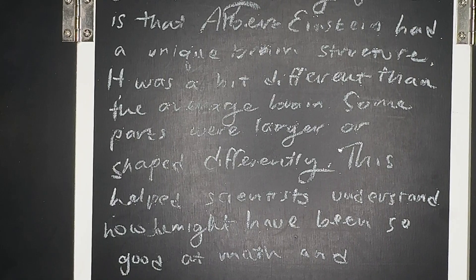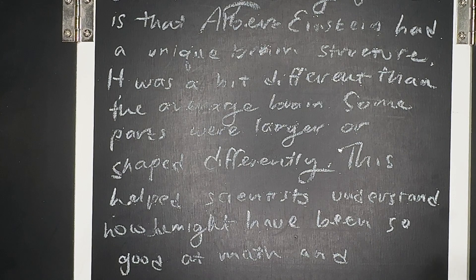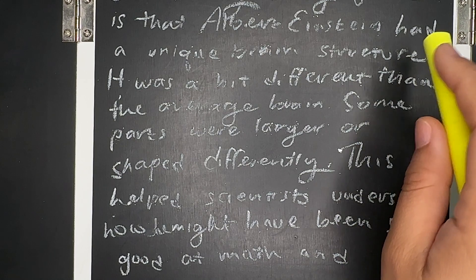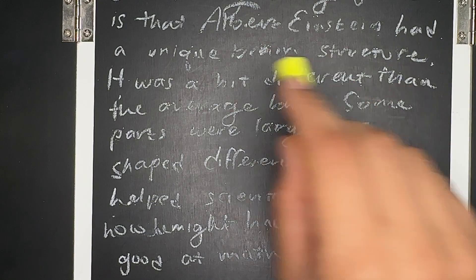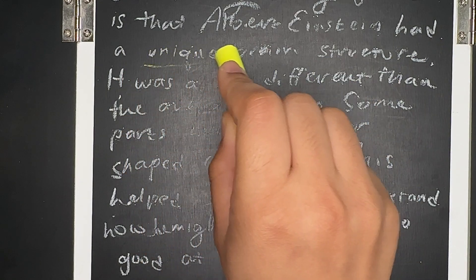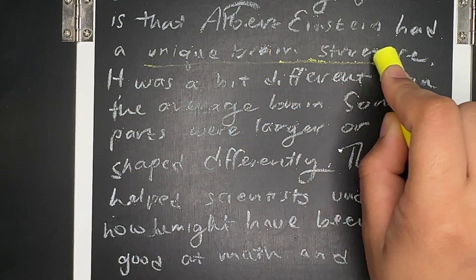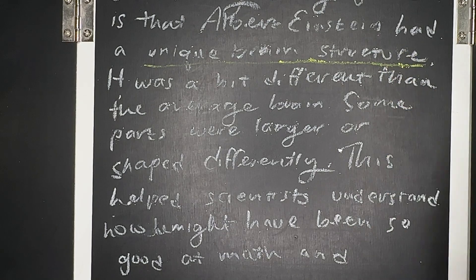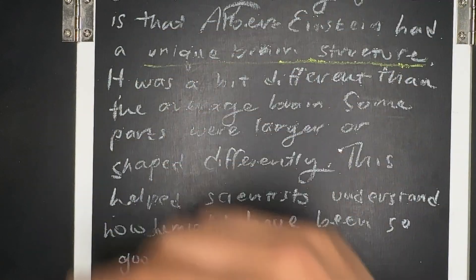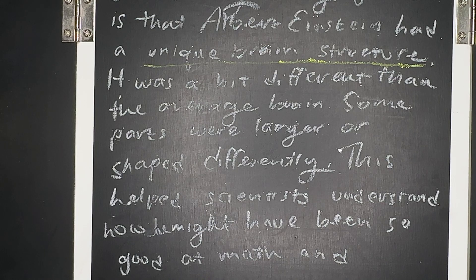Were you able to figure out the sentences in this topic? In this paragraph, indicating that Albert Einstein had a unique brain structure helped summarize everything that was stated in this paragraph.